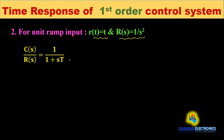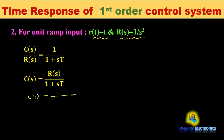From this equation, C(s) will be equal to R(s) × 1/(1 + sT), which gives C(s) = 1/s² × 1/(1 + sT). Taking T common from the denominator, this becomes (1/T) divided by s² × (s + 1/T).